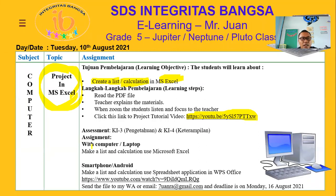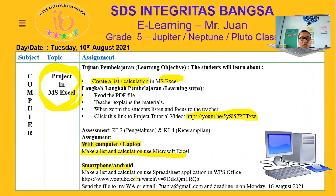Okay students, this one — statement. Sir gives two options. Ada kasih dua option. First, with computer — this is make list and calculation using Microsoft Excel, use laptop or computer. And the second, smartphone or Android. If you don't have laptop or computer, you can use smartphone atau Android.